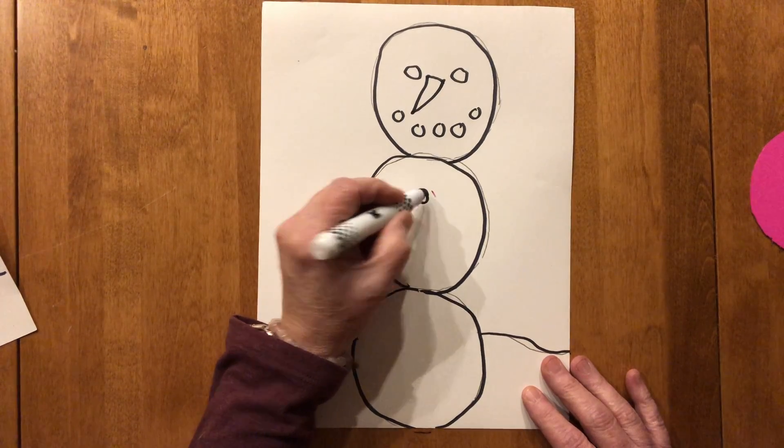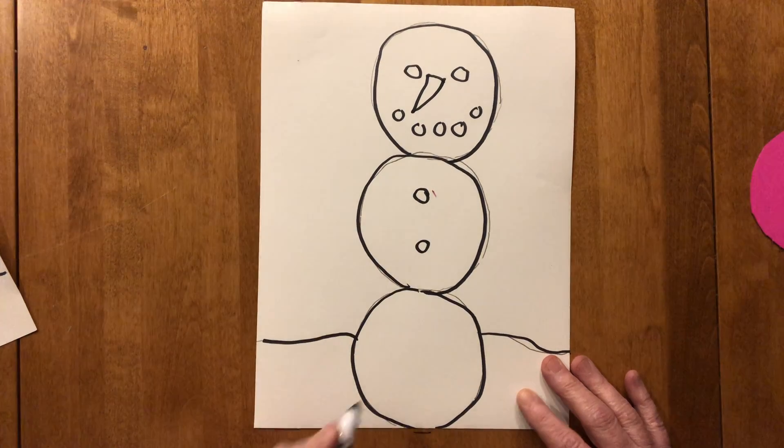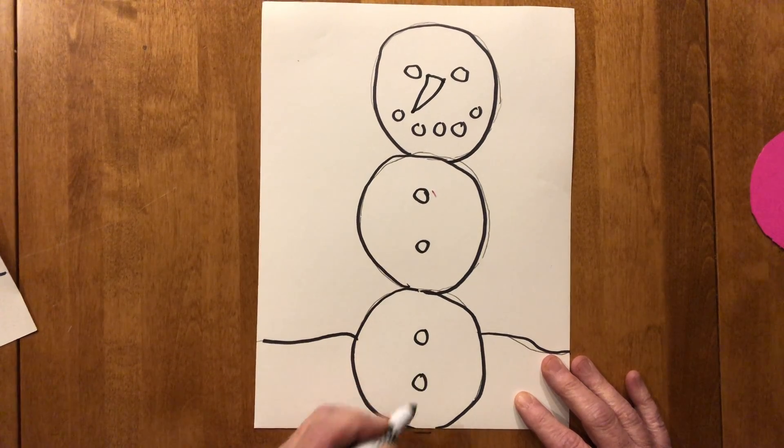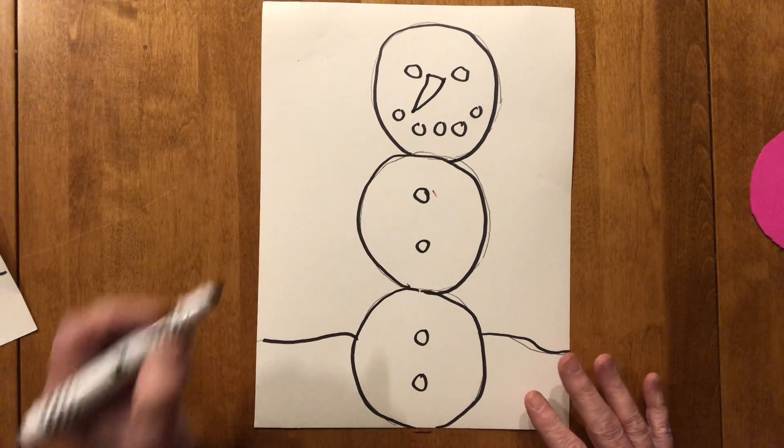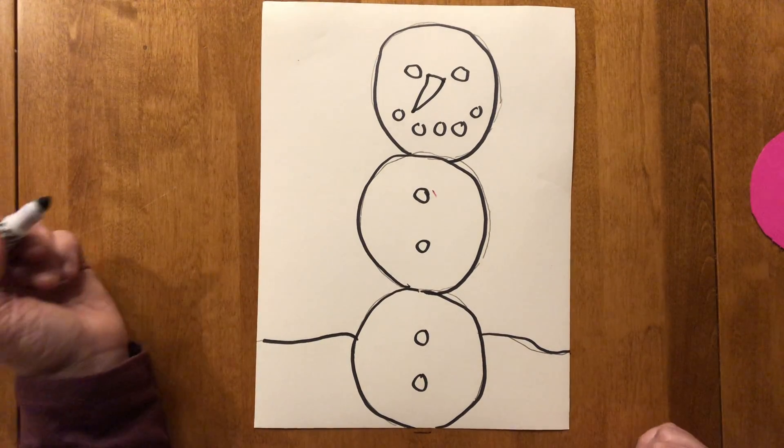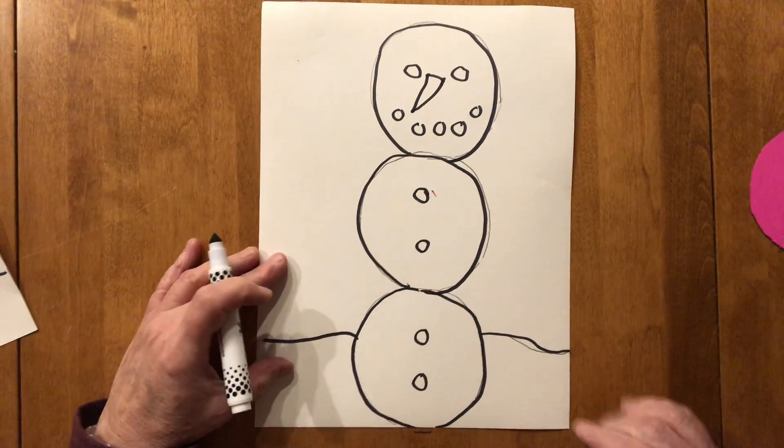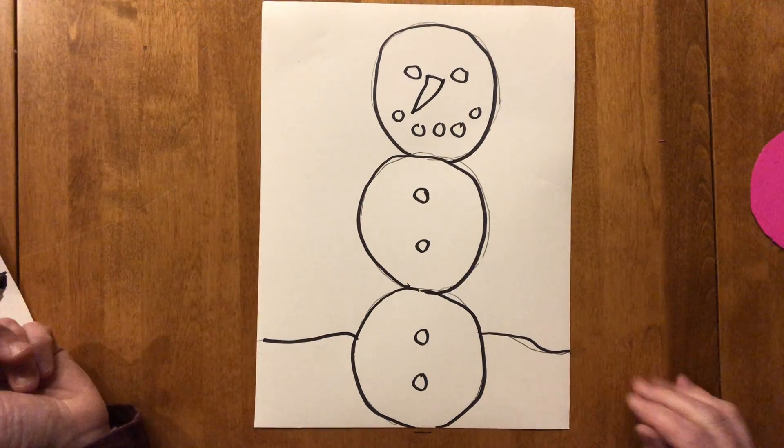I'm going to do two buttons on the second circle and two buttons on the next circle and then I'm going to decide what's my snow person's job going to be and I'm going to decide is it a boy or a girl.